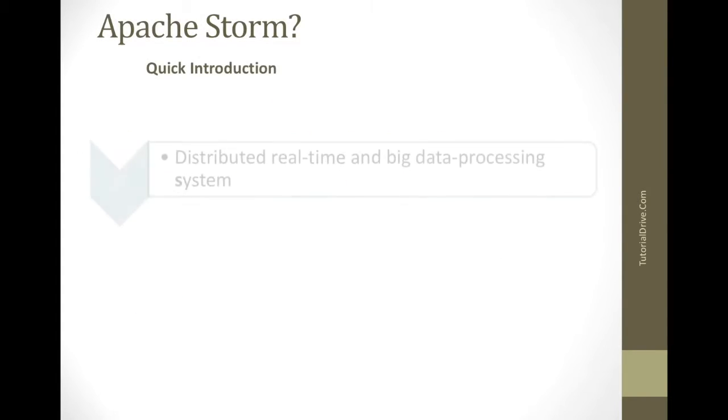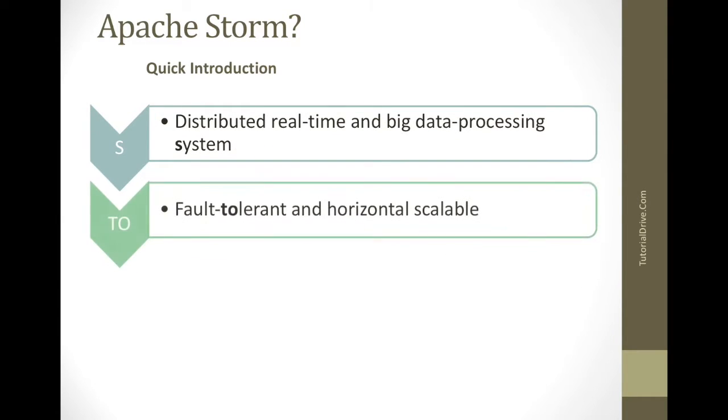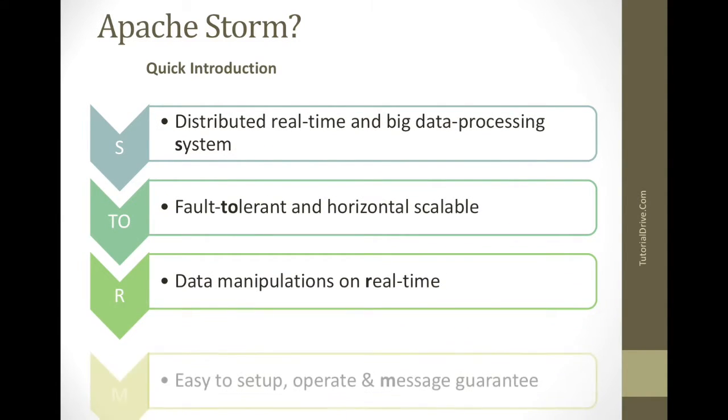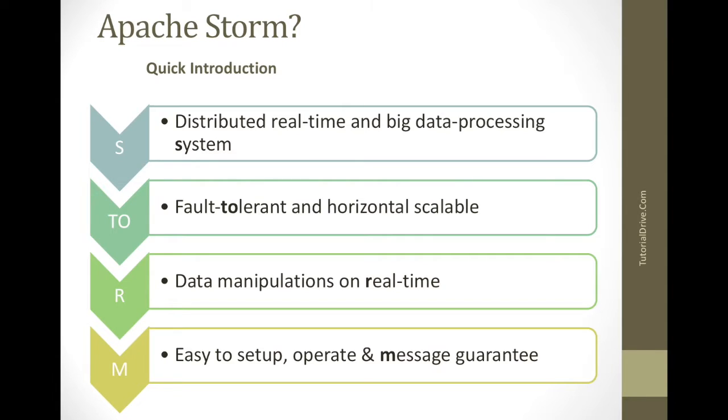What is Apache Storm? Apache Storm is a distributed real-time big data processing system and it is designed to process vast amounts of data in a fault-tolerant and horizontally scalable method.